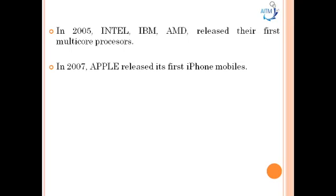In conclusion, over 95% of electronic chips produced in a year are for embedded systems, and they are hidden in familiar objects such as airlines, cars, mobile phones, microwave ovens, washing machines, cameras, refrigerators, and many more electronic devices.